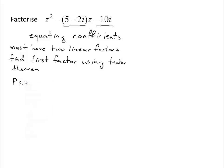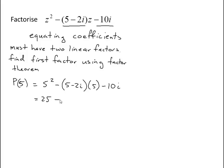I'm going to try 5. When I put 5 in, that gives me 5 squared minus (5 minus 2i) times 5 minus 10i. That gives me 25 minus 25 plus 10i minus 10i, which is 0.